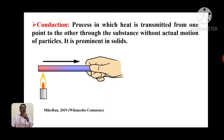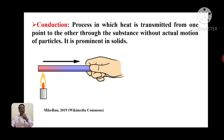First we will see what is conduction. In the figure, you can see the conduction process. The process in which heat is transmitted from one point to the other through the substance without actual motion of the particles — it is prominent in solids. Here in the figure, we can see one candle flame and a rod which is held in hand. One end is on the flame, so that end will receive heat from the flame and will become hot. The arrow shows conduction of heat from that hot end to the cold end which is in our hand. This happened due to the conduction process.